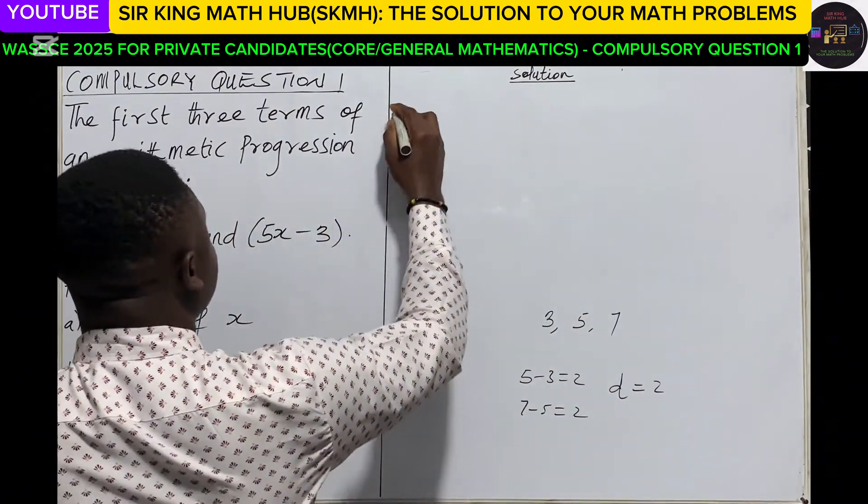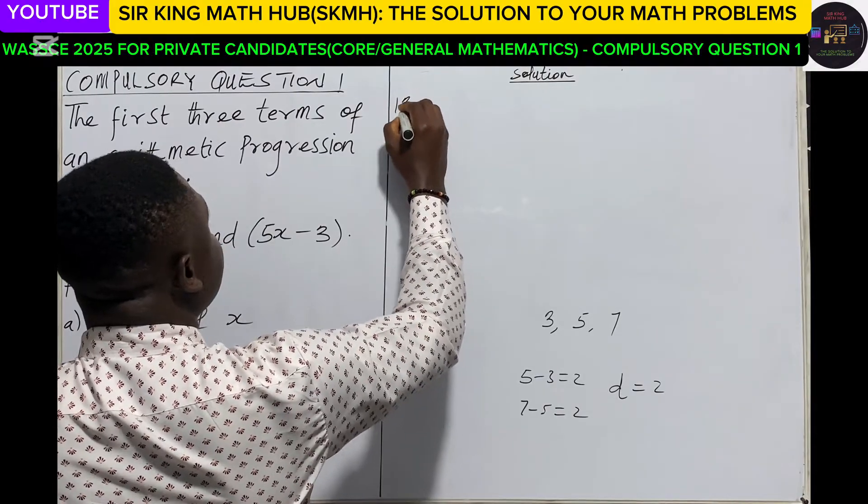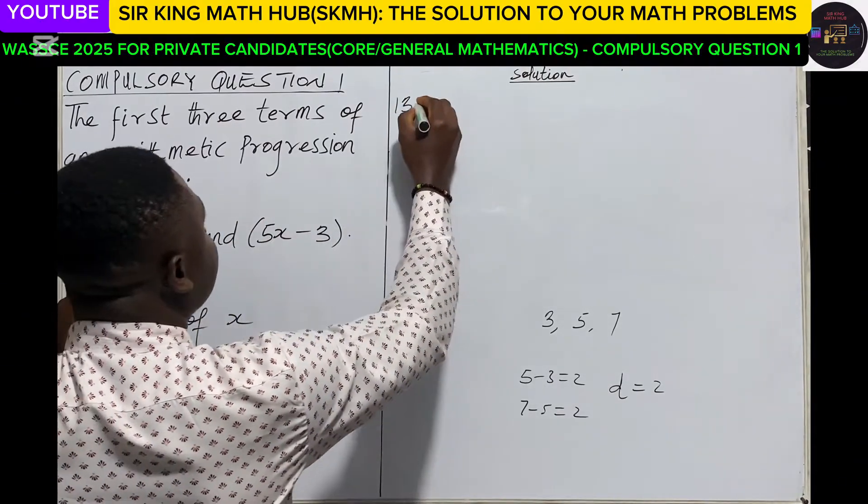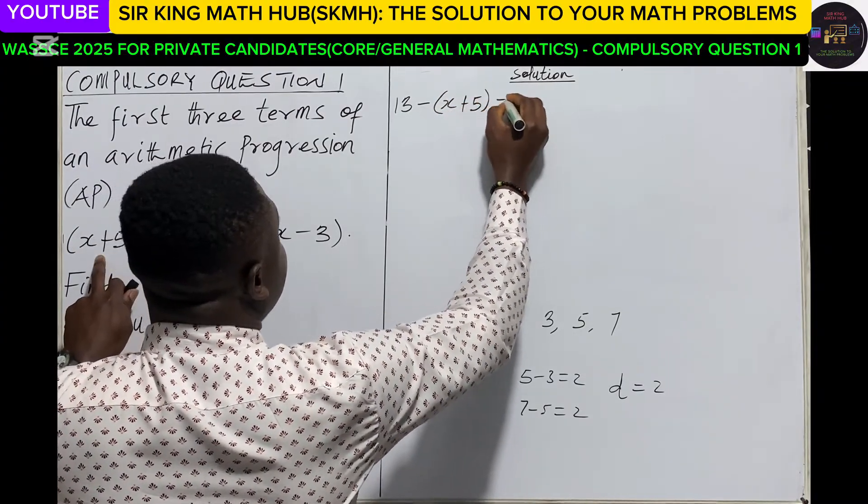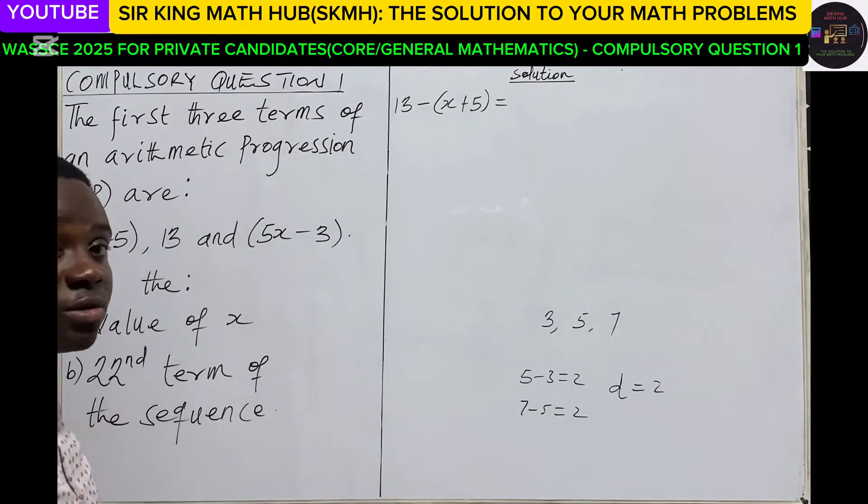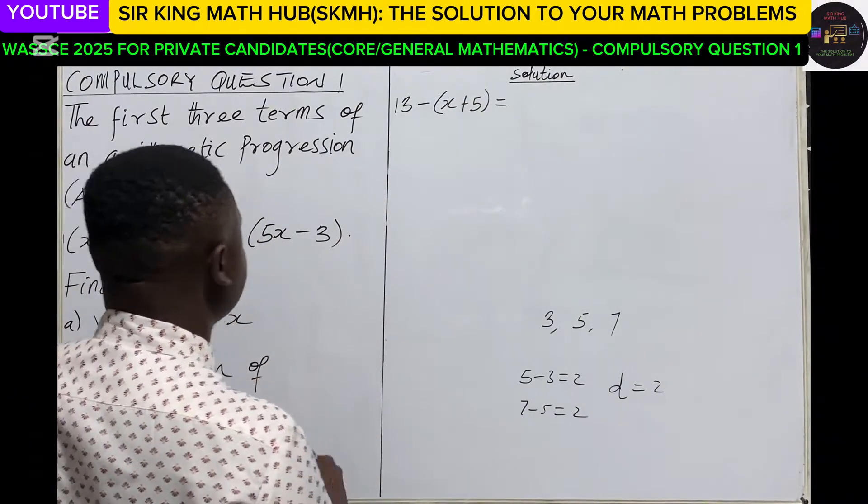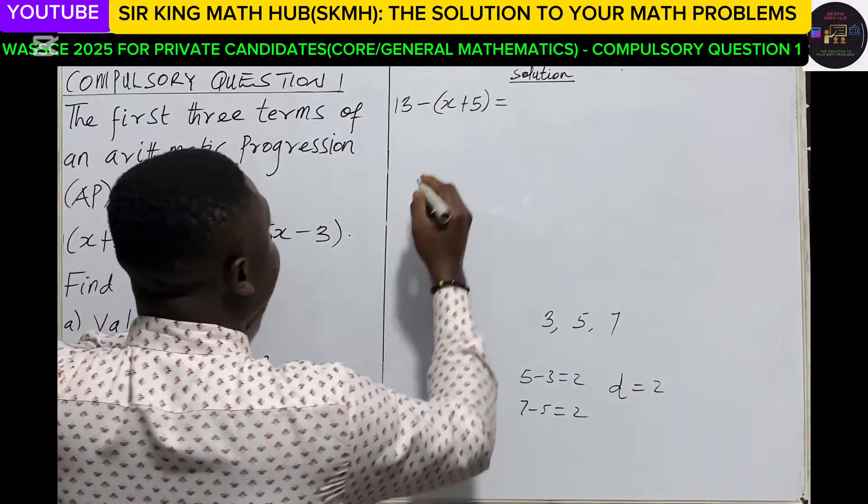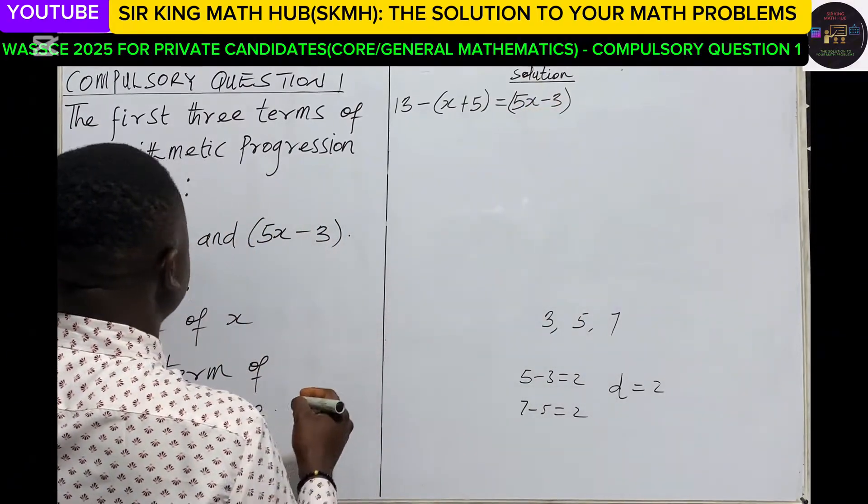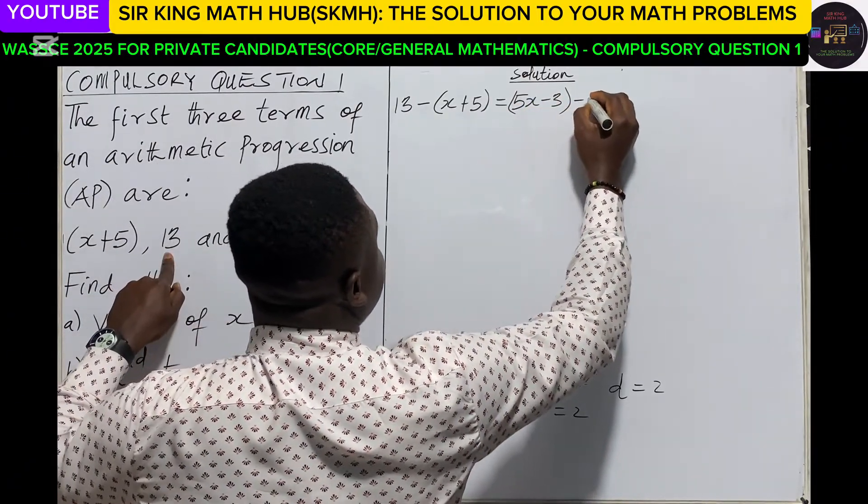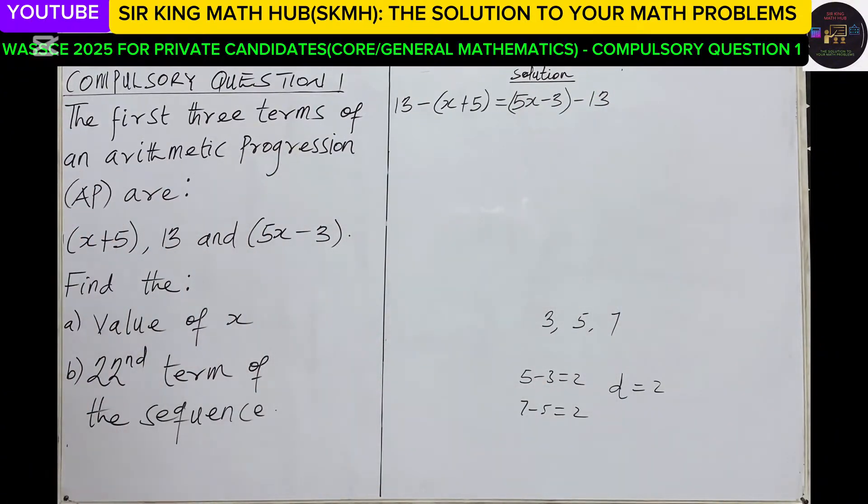With this approach, someone can pick the second term minus the first term. Here the second term is 13, so this is 13 minus the expression for the first term, x+5. This will give us the common difference. Another way is taking the third term, which is 5x-3, minus the second term, which is 13.